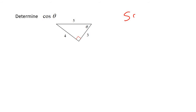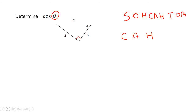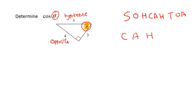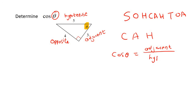Here's the next one. While we're still learning, let's keep writing SOHCAHTOA. Now they want cos again, so we're just going to write the C-A-H part. Let's quickly go get all our labels — they want us to start at that angle there. The side opposite the 90 is the hypotenuse. The side opposite the angle you are looking at is the opposite. The other side is the adjacent. So cos theta is equal to adjacent over hypotenuse, which is 3 over 5.